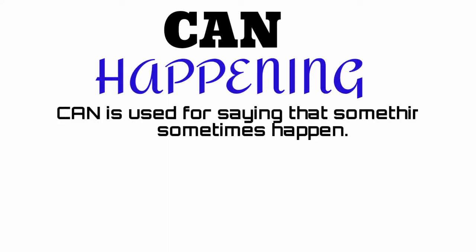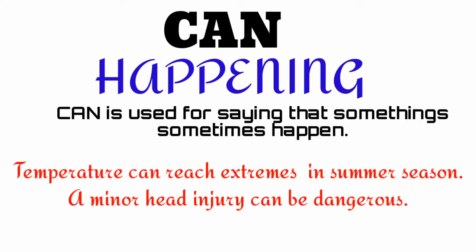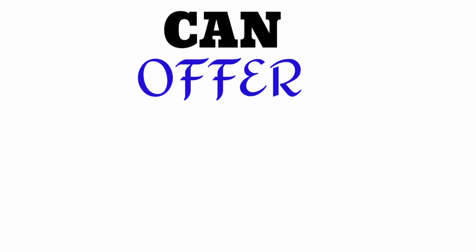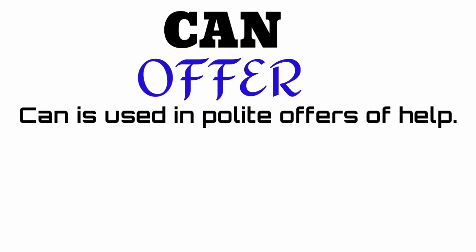Number six: can denotes happening. Can is used for saying that something sometimes happens. For example: 'Temperature can reach extremes in summer season.' 'A minor head injury can be dangerous.'